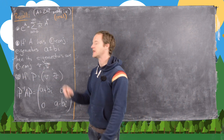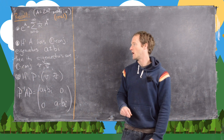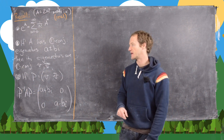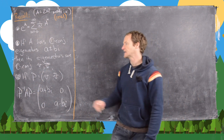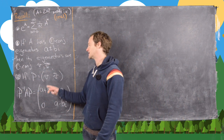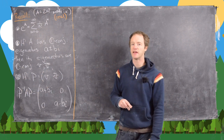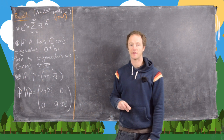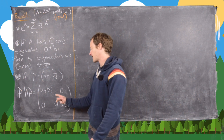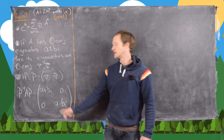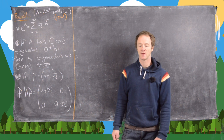We'll call the eigenvectors V and V-bar, so you only have to calculate one eigenvector and you get the other one for free — it's the complex conjugate, because everything is real. Now if we set P equal to the diagonalizing matrix with columns V and V-bar, then P inverse AP is the diagonal matrix with A plus Bi and A minus Bi on the diagonal.